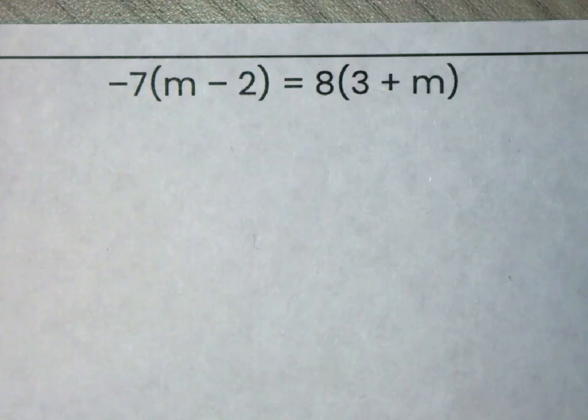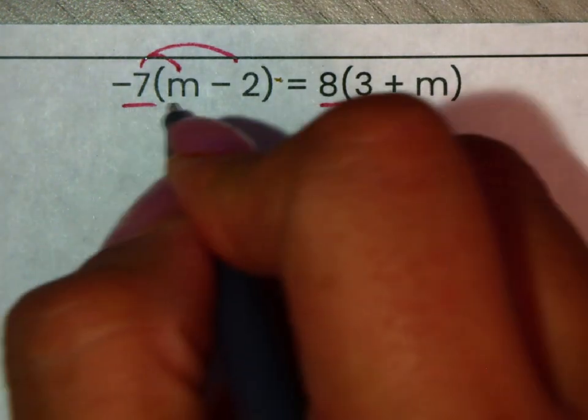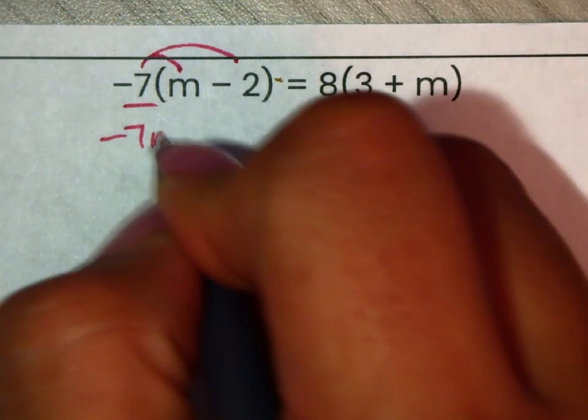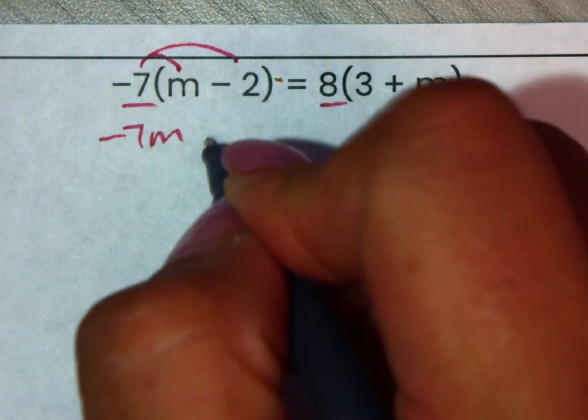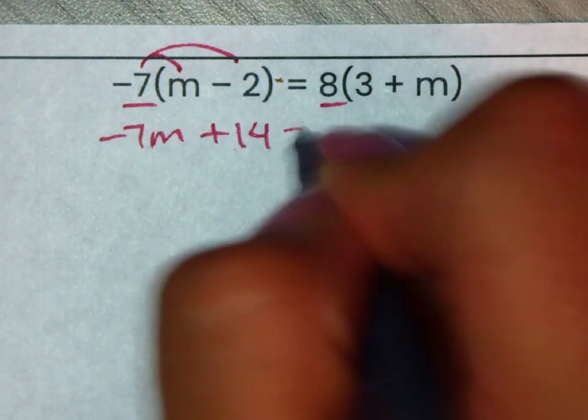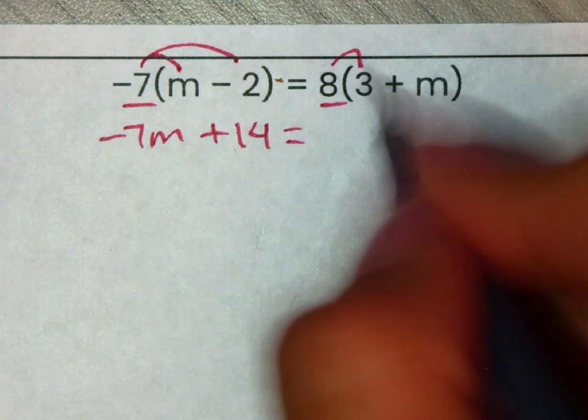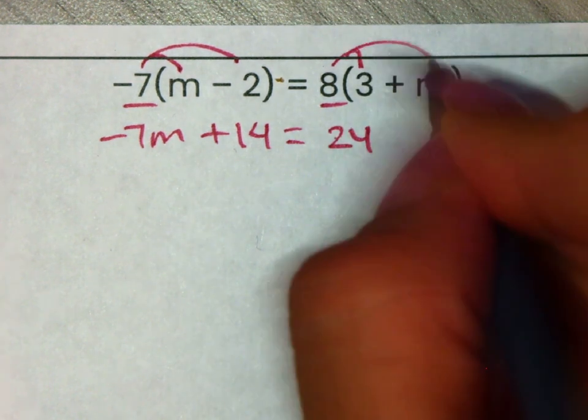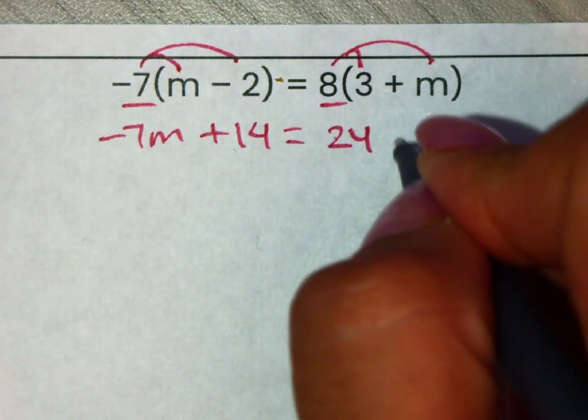Another example in the notes that we did in class is this one, where we distribute. That's always your first step. So negative 7 times m, that's negative 7m. Negative 7 times negative 2, that's positive 14. Over here we have 8 times 3, which is 24. And 8 times m, which is 8m.